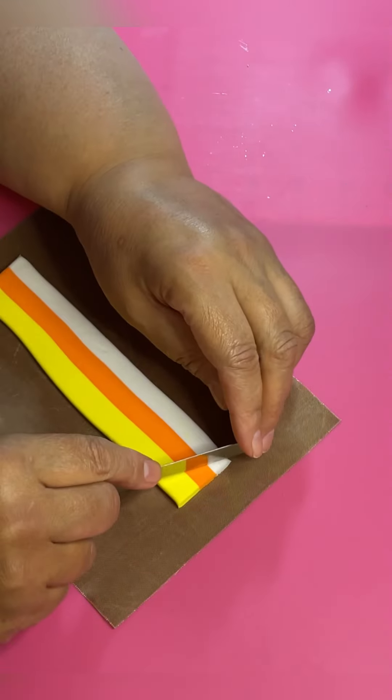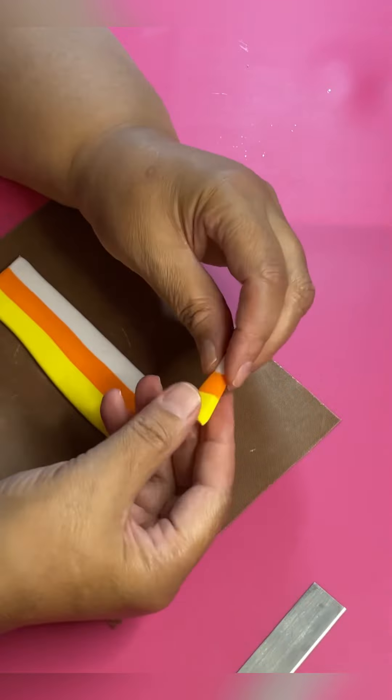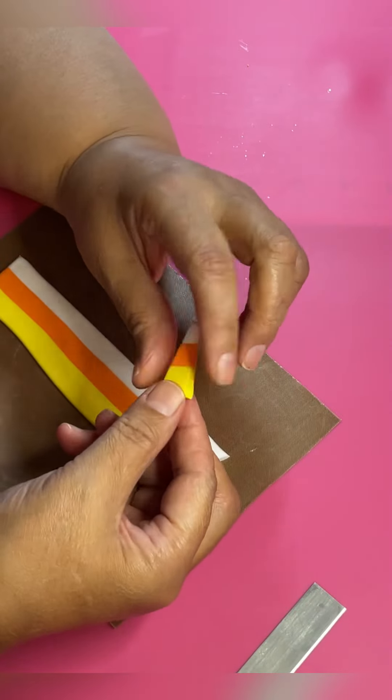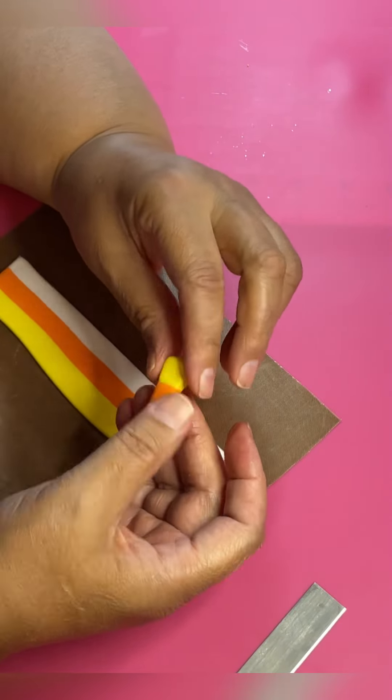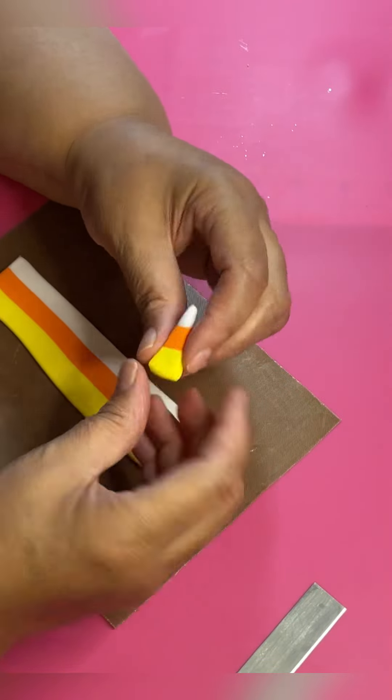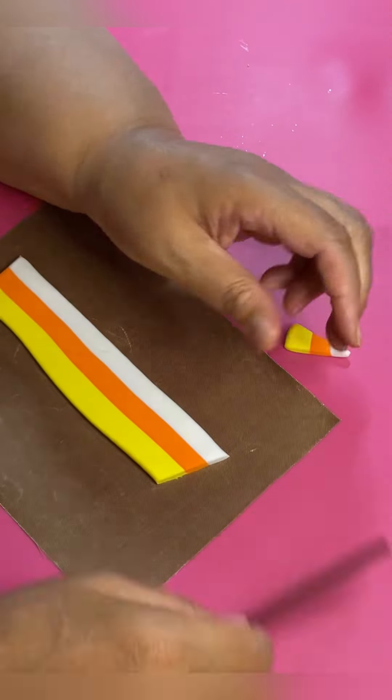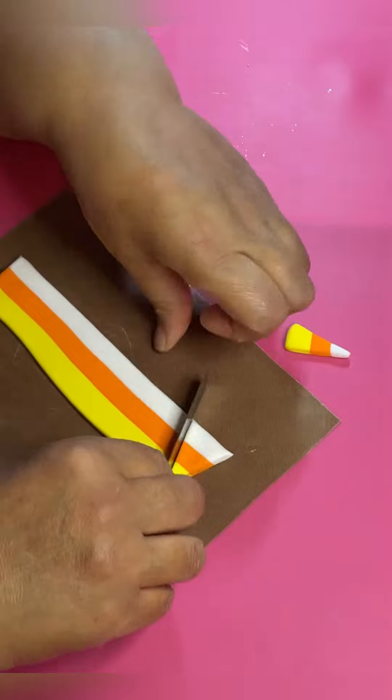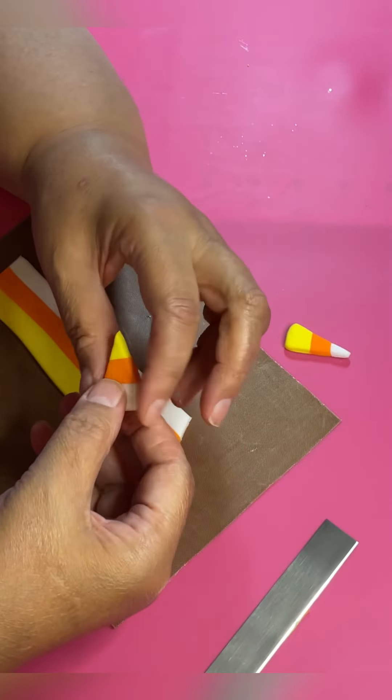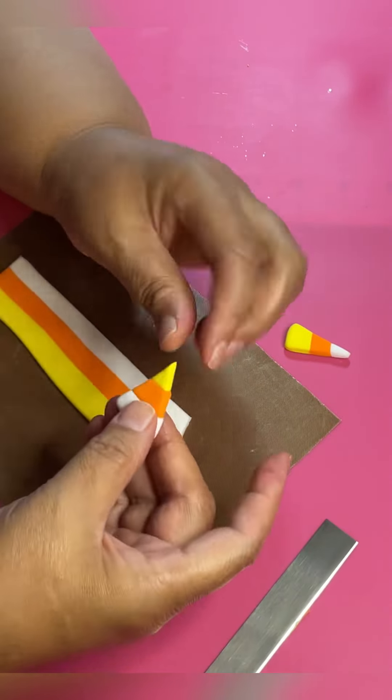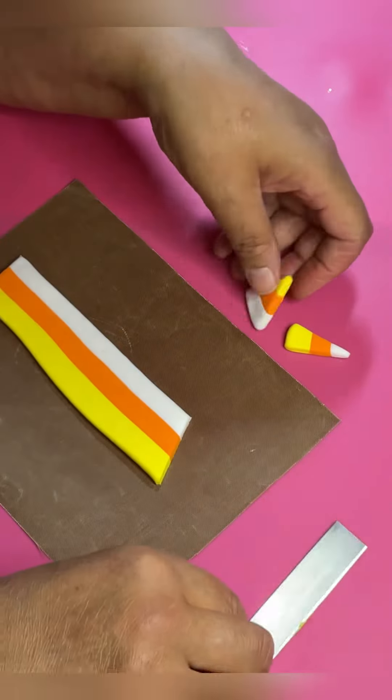Now you want to take your little clay slicer and you just want to make a little triangle out of it. And then you can take those edges and smooth them out and round them out, because they're kind of sharp. If you see right there, you don't want them that way. You want them a little rounded to look more candy corn-like.